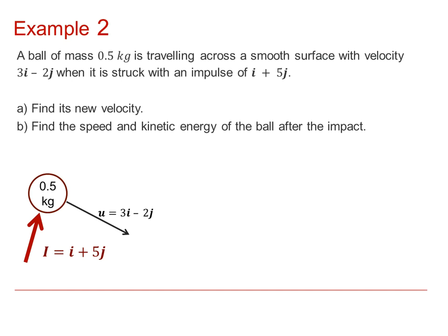We can say that the impulse is equal to mv minus mu and therefore, we have that 1, 5 is equal to 0.5v minus 0.5 and 3, negative 2. The easiest way to do that is to multiply by 2, so that we get 2, 10.